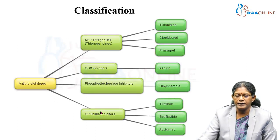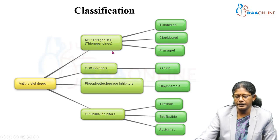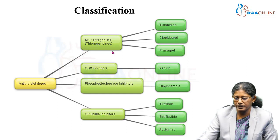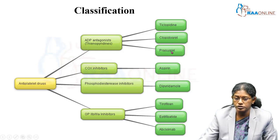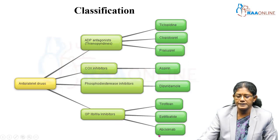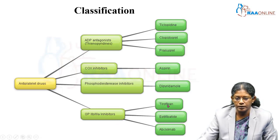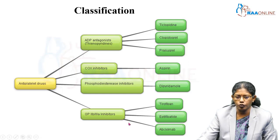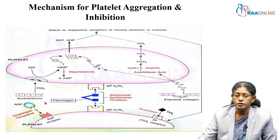The classification of antiplatelet drugs: the first group is ADP antagonists — adenosine diphosphate antagonists — including ticlopidine, clopidogrel, and prasugrel. The second group is COX inhibitors, including aspirin. The third group is phosphodiesterase inhibitors, including dipyridamole. The fourth group is GP2b3a inhibitors, including abciximab and tirofiban.